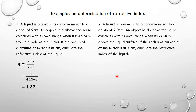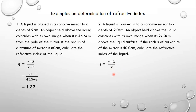We don't need to subtract D again because the distance given is measured from the surface of the liquid, meaning D has already been subtracted. So the X minus D has already been given. We use the formula R minus D divided by X, where X is effectively X minus D. Substituting R as 40, D as 2, and X as 27, we get 1.4 as the refractive index.